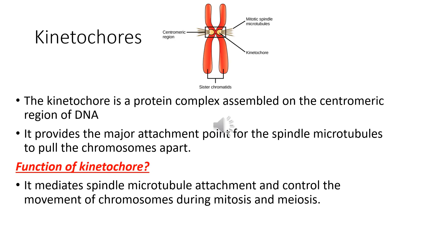The kinetochore is a protein complex assembled on the centromere region of DNA in the middle. In the picture you can clearly see two sister chromatids being pulled into the center with the help of the kinetochore. It provides a major attachment point for the spindle microtubules to pull the chromosomes apart. The function of the kinetochore is that it mediates spindle microtubule attachment and controls the movement of chromosomes during mitosis and meiosis.